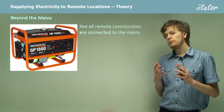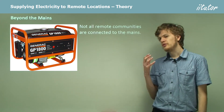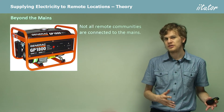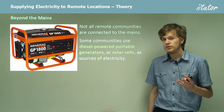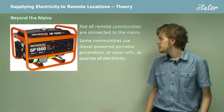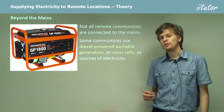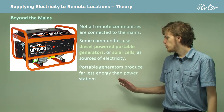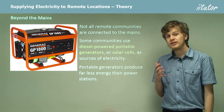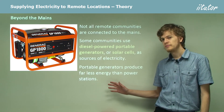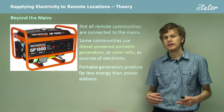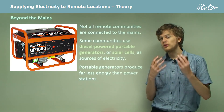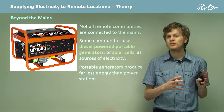Not all remote communities are able to be connected to the mains power supply — that is the power supply used in large cities. Some communities use diesel power generators such as this one. They might also use solar cells in order to produce electricity. Portable generators will produce far less energy than power stations and are usually fueled by things like gasoline, so they're able to produce electricity for a much smaller community.